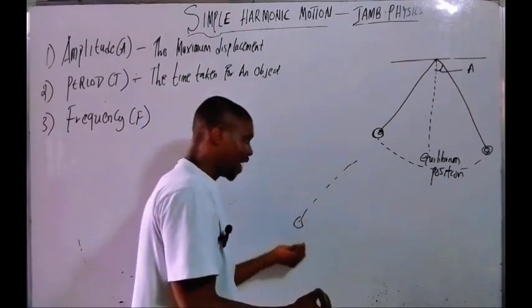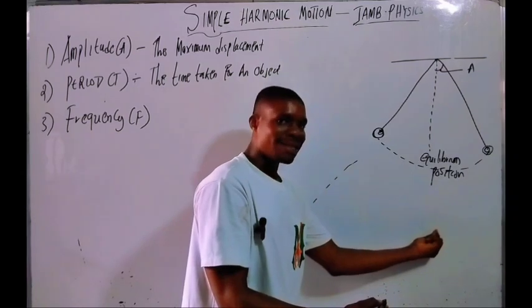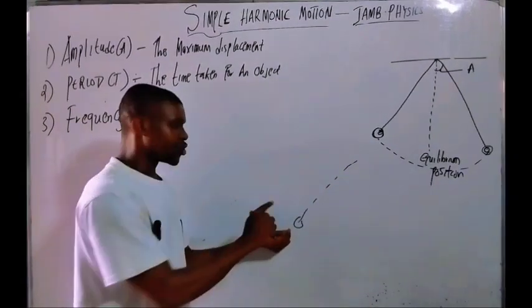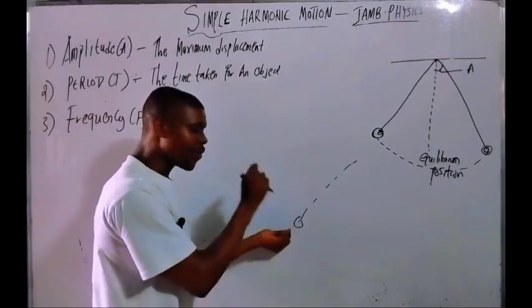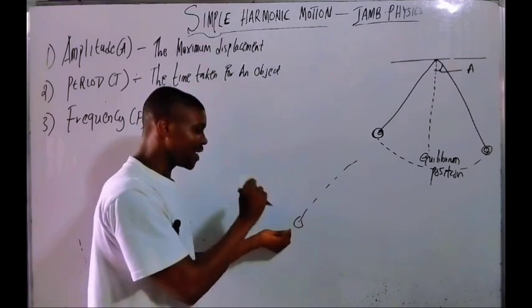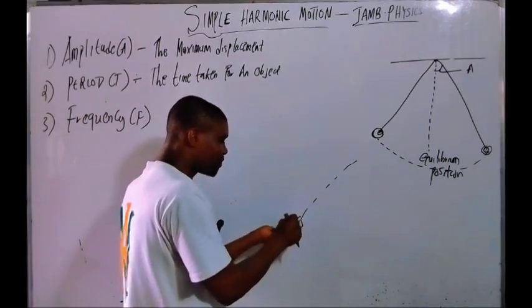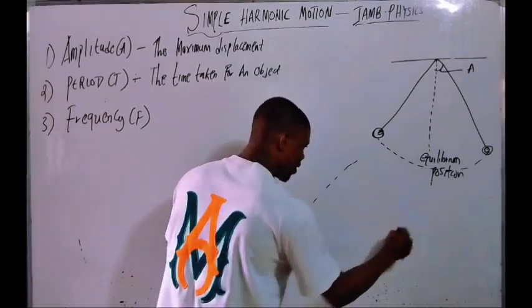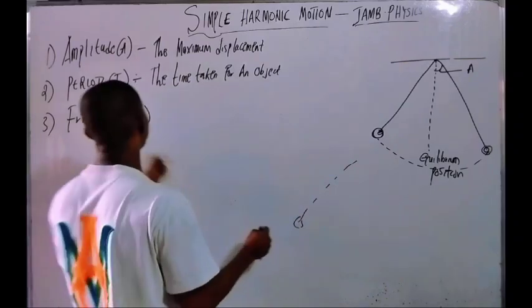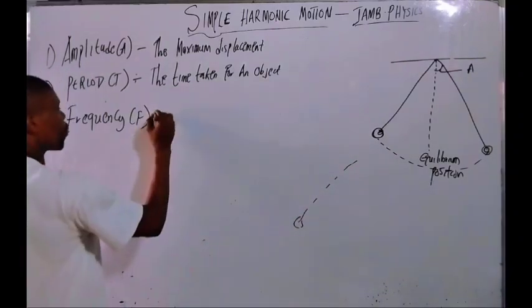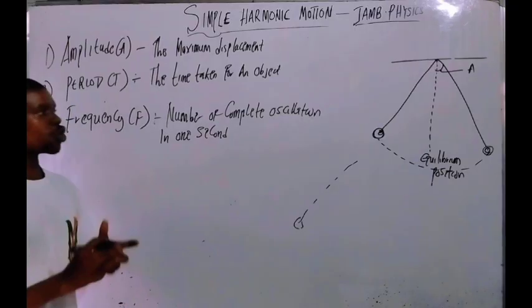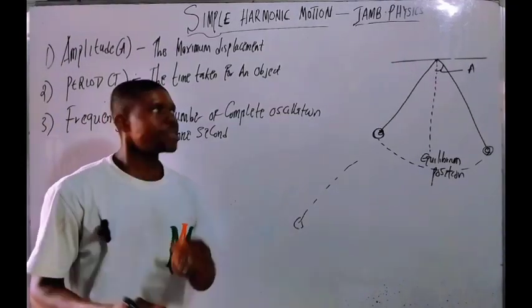...if you leave it, it will go there and come back — that is one cycle. So the time taken for the object to complete one cycle is called the period. Now, frequency is the number of complete oscillations in one second.